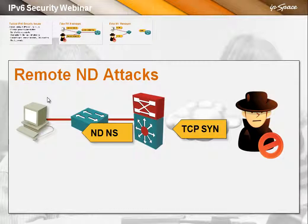And then there are the remote attacks, where someone from outside could attack your layer 3 switch or your router and overload its CPU, just by sending TCP SYN packets to bogus IPv6 addresses.